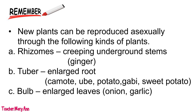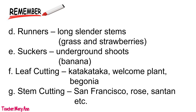Bulb — that is enlarged leaves. Examples are onion and garlic. Runners are long slender stems; examples are grass and strawberries. Suckers — that is underground shoots; the example is banana. Leaf cutting — examples are katakataka, welcome plant, and begonia. Stem cutting — examples are San Francisco, rose, santan, etc.